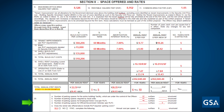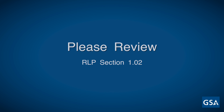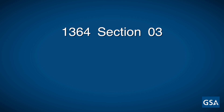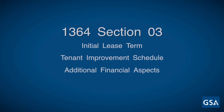Line 20 is where you will fill out the parking information as shown in the example. Please review Section 1.02 of the RLP for the amount and type of parking spaces the government is seeking to ensure you can comply. In Section 3, we will discuss the initial lease term, tenant improvement schedule, and additional financial aspects of the offer.